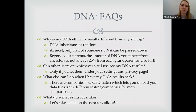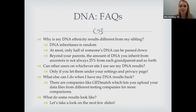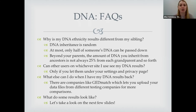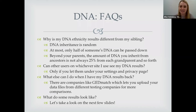A common question: why are my DNA ethnicity results different from my siblings? DNA inheritance is random — at most you inherit half of someone's DNA. My mom's father had Middle Eastern heritage and her mom had Swiss heritage; by the time it reached me, I have no Middle Eastern but I do have Swiss. Your siblings can receive different portions of parental DNA, just like inheriting blonde hair or brown eyes.